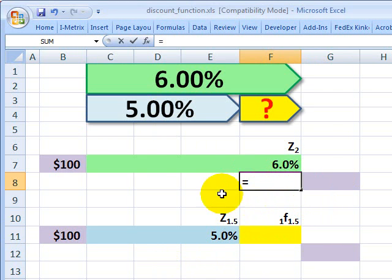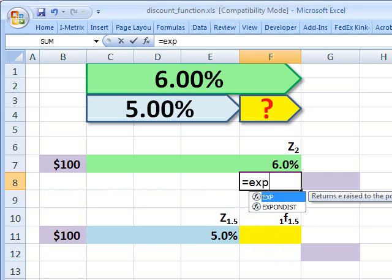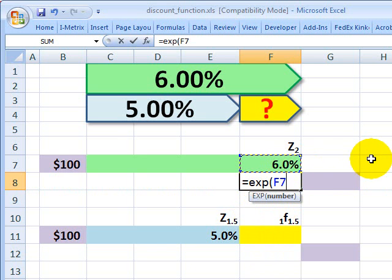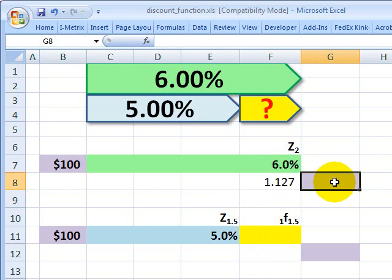So now I'll do the 6% continuously compounded over two years. The formula for this is really just the exponential function, or e raised to the rate, 6%, times the number of years. That's how easy that part is. Multiply that by my starting value of 100.